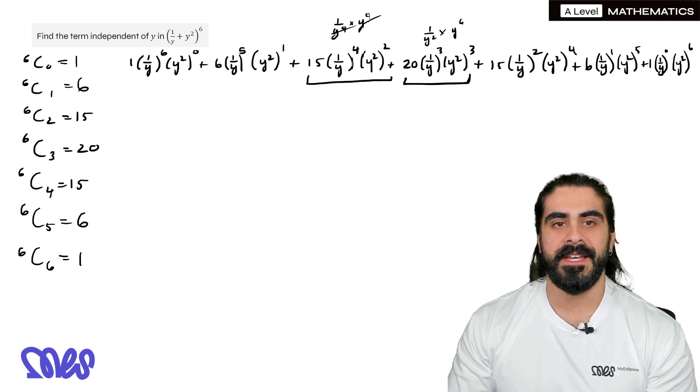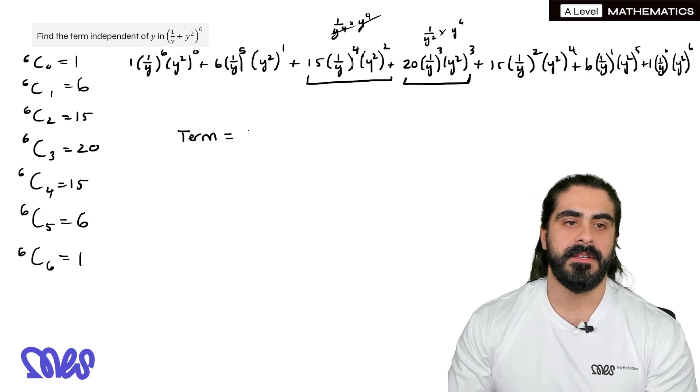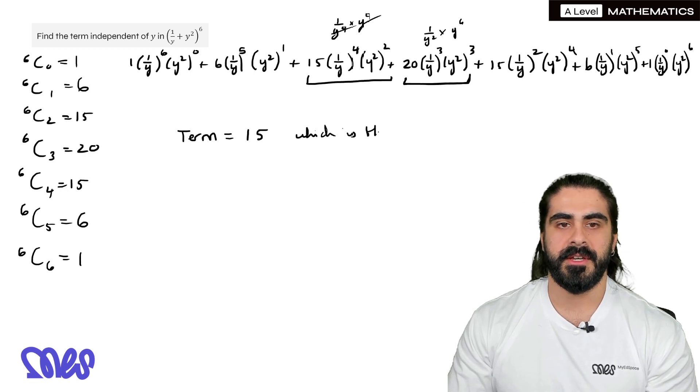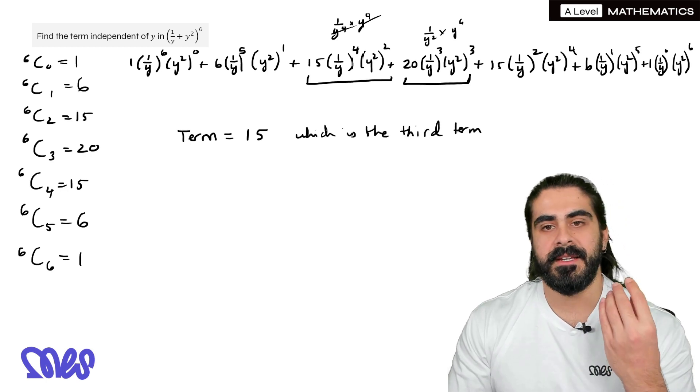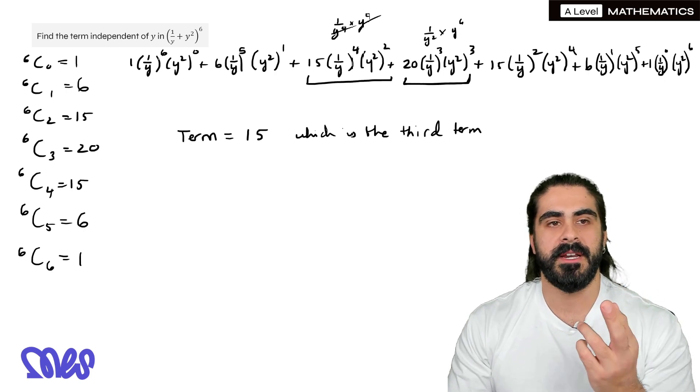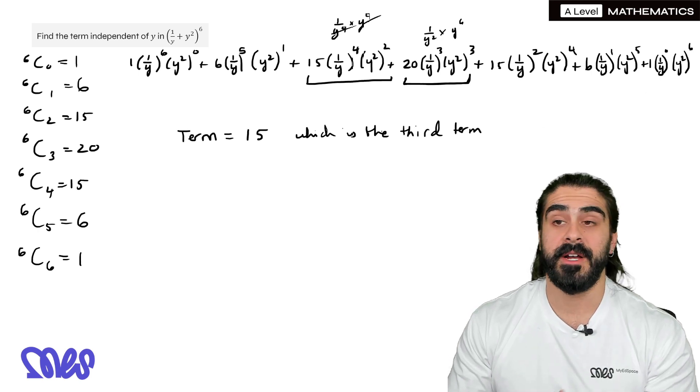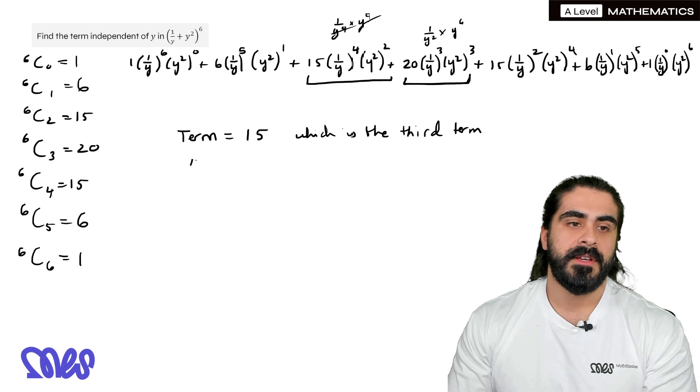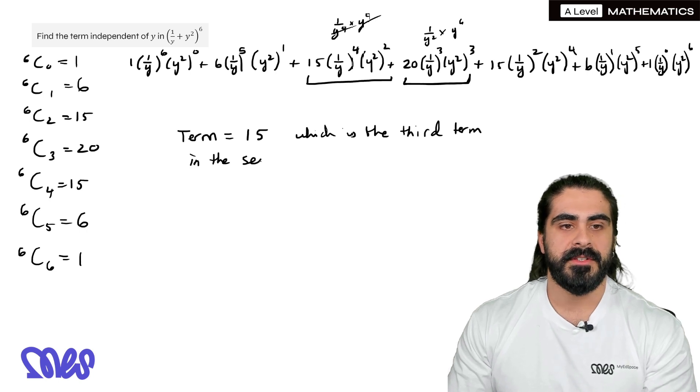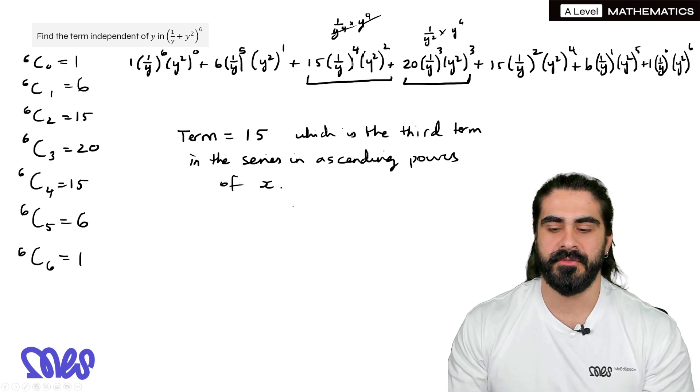So the term that is independent of y is the third term here, which is 15. So the term is 15, which is the third term. And in this case, it would be in ascending powers of y, we're going up. So the first term here is y to the power of minus six. If you look on the other side, it's y to the power of 12. So which is the third term in the series in ascending powers of x. So this is us just being thorough in terms of our description.